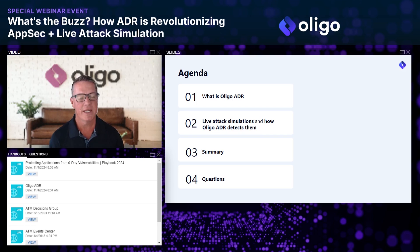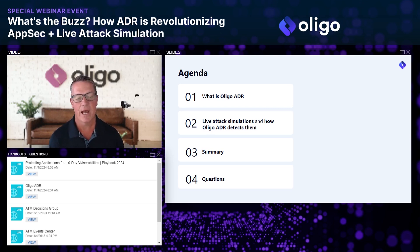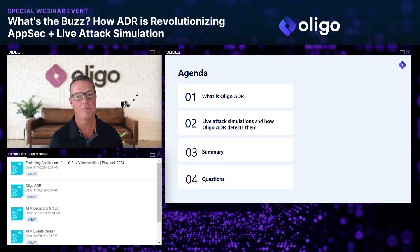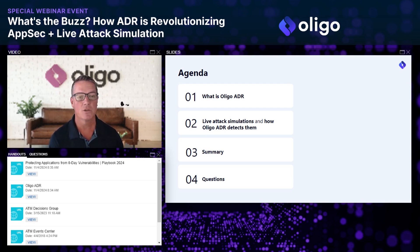As part of today's agenda, we'll go through a quick introduction into ADR — what are the details, why is it needed, and its importance. We'll then walk through a few live attack scenarios showing how attacks are performed and how Oligo can make you aware of those. We'll summarize and then go through questions as they come in during the webinar.